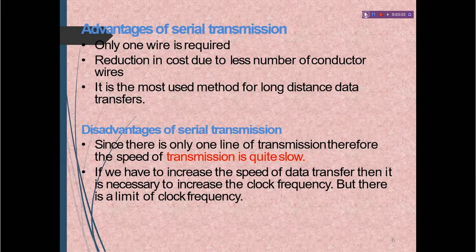Advantages and disadvantages of serial data transmission. Advantage: only one wire is required, reducing cost due to fewer conductor wires. It is the most used method for long distance data transfer. Cost is low because only a single wire is used from sender to receiver. Disadvantage: since there is only one line of transmission, the speed of data transmission is quite slow.